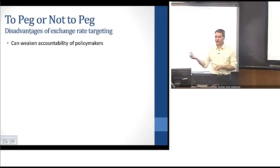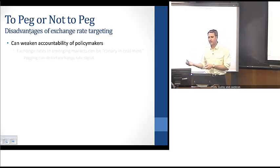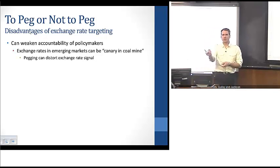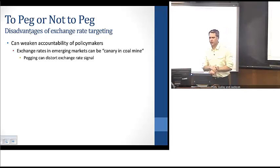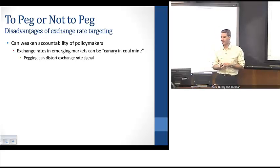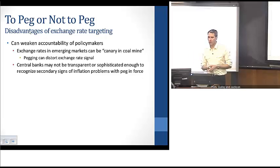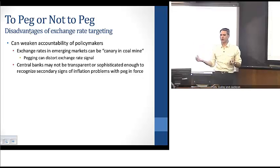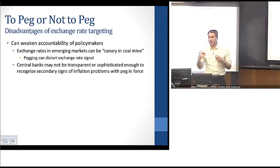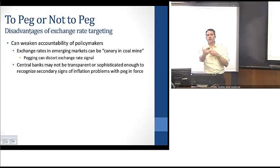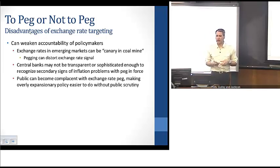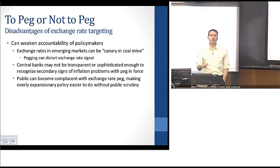In addition, one disadvantage is that a peg can weaken the accountability of policymakers, in the sense that exchange rates are often the first mechanism through which we can identify potential problems in the economy — particularly for smaller and emerging market countries. The exchange rate can act as a canary in the coal mine in identifying financial or fiscal imbalances. By intervening to fix the rate, that distorts the signal that something may be fundamentally wrong. Furthermore, central banks may not be sophisticated enough to recognize signs of trouble when the exchange rate is fixed, and the public can become complacent — they don't scrutinize policies because the exchange rate appears stable.